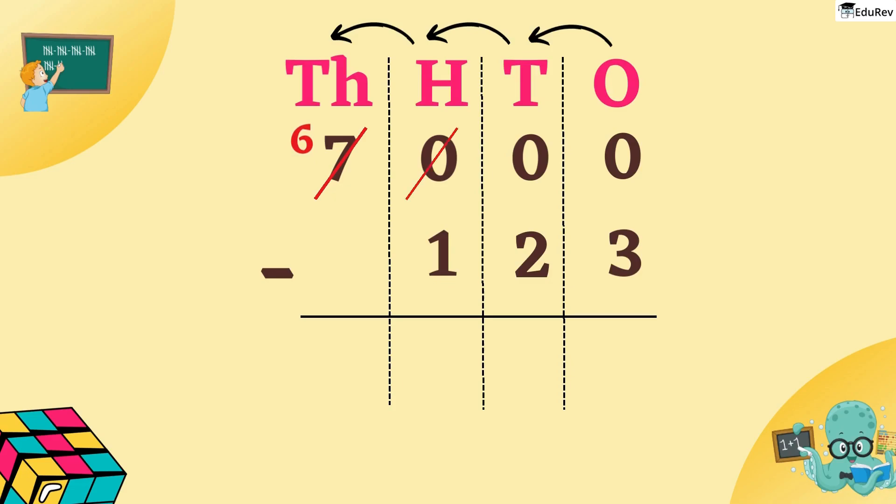Now, the 100s place has 10. But since the 10s place borrows from 100s, we are left with 9 in 100s place. And in 10s place, we have 10. But even the 1s place borrows from 10s place. So, in 10s place, we get 9. And in 1s place, we have 10.